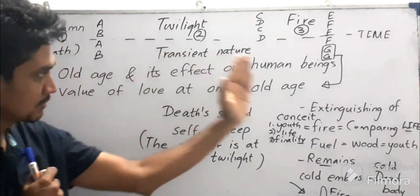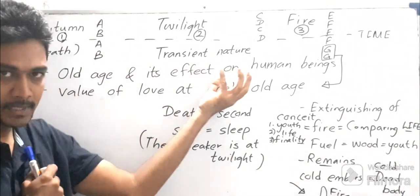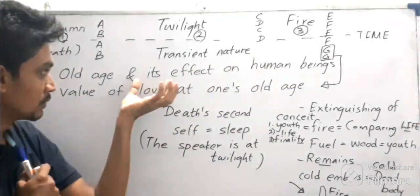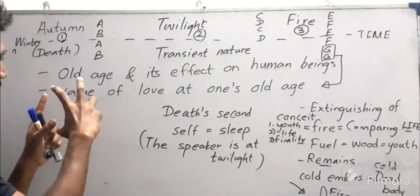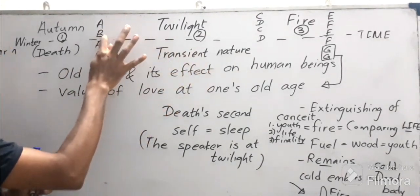Based on these three main metaphors, we are going to analyze the impermanency of human life, the transient nature of human life, and the mutability of human life. Now let us have an understanding about the octave: ABAB CDCD. The octave part brings out a kind of argument for the sonnet.